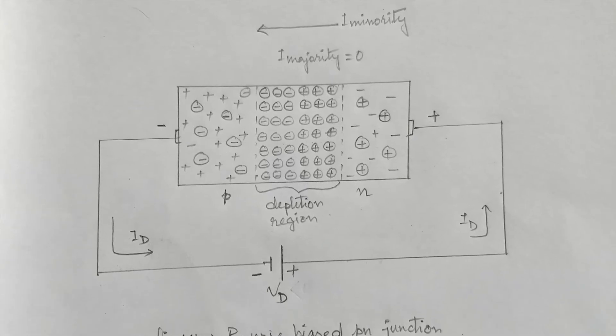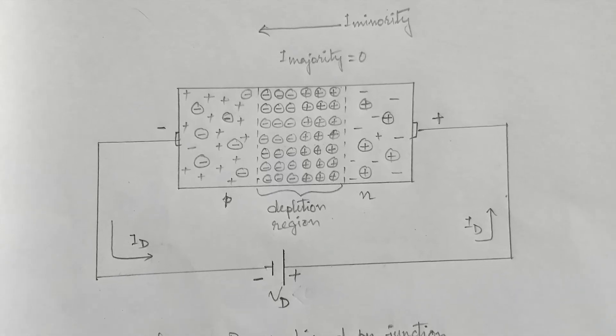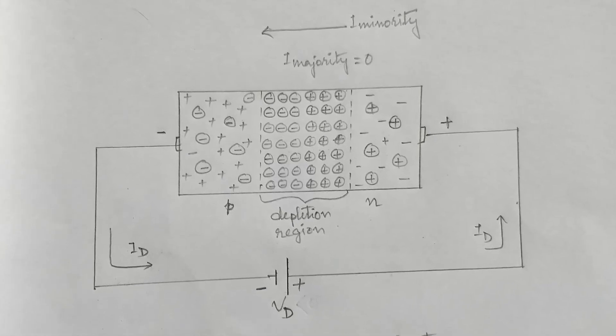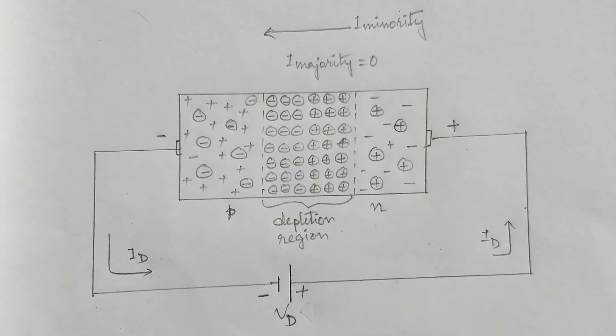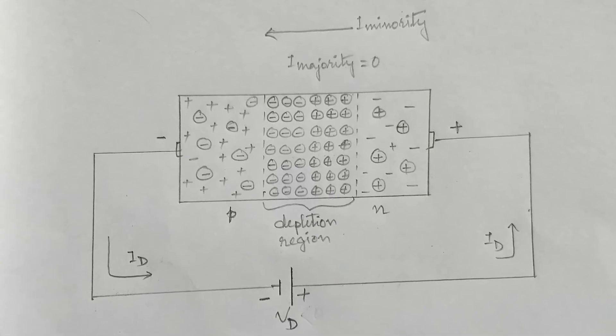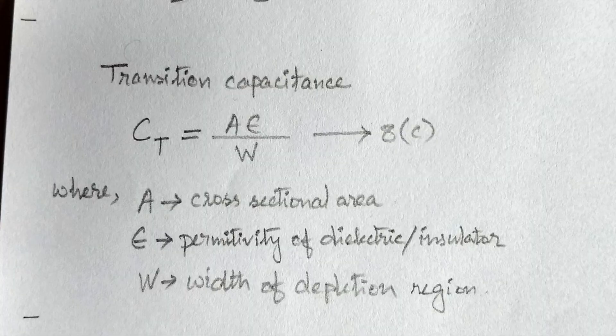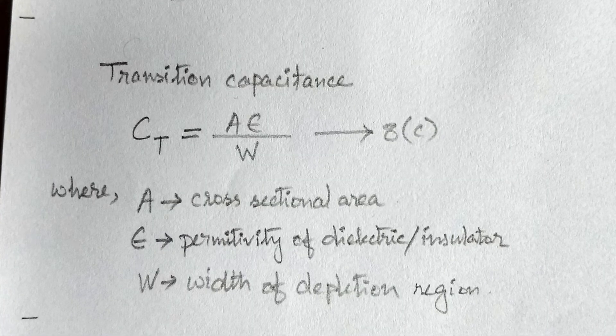Since the reverse bias voltage causes the majority charge carriers to move away from the depletion region or the junction region, the thickness of the depletion region increases with the increase in reverse bias voltage. The formula for transition capacitance is given by Ct equal to A epsilon by W.